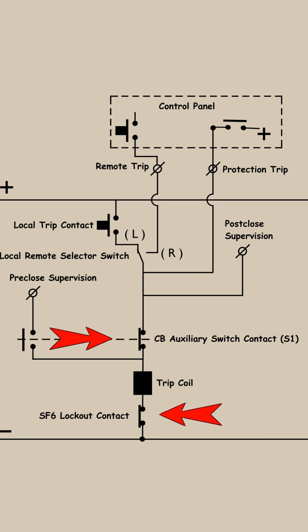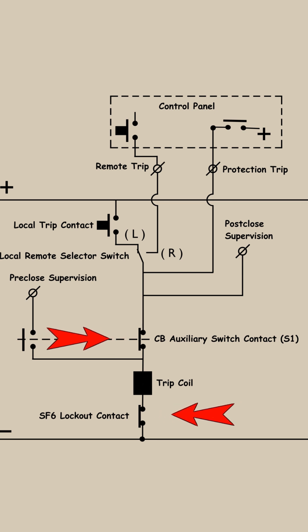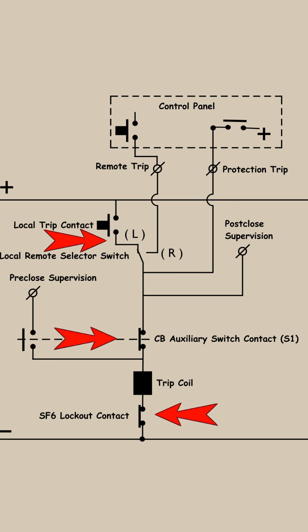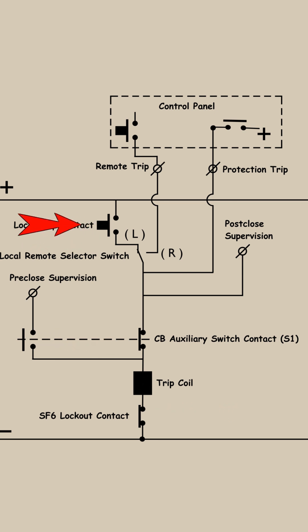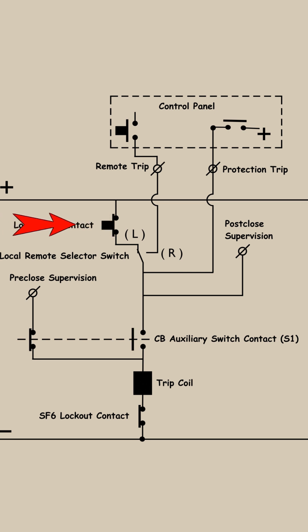If these two contacts are in the closed position and the local/remote switch is in the local position, then only by pressing the local trip push button we can trip the circuit breaker.